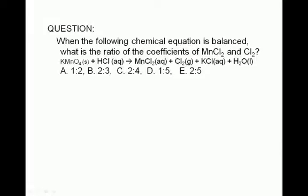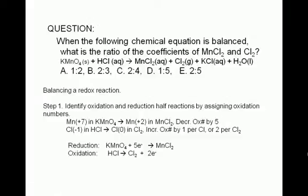One thing you will quickly realize if you try to balance this equation by inspection is that it is not easy to do. When this happens, check if the reaction is a redox reaction. If it is a redox reaction, there are a couple of extra steps you need to do to facilitate the process of balancing the equation. The first is to identify the oxidation and reduction half reactions by assigning oxidation numbers to all the elements involved in the reaction.